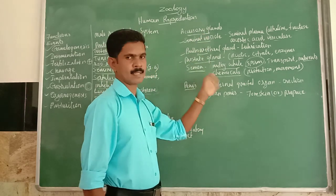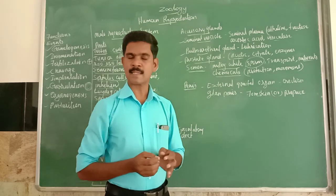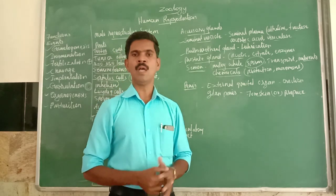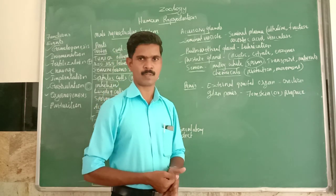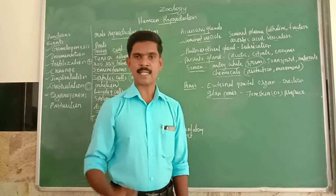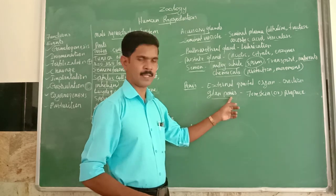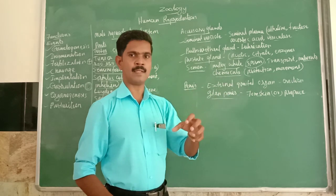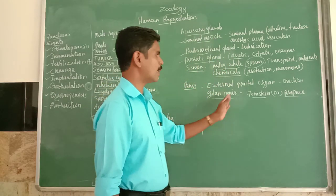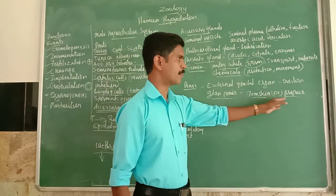The last part of the male reproductive system is the penis, the external genital organ. It is made up of special types of tissue that become erect during sexual activities. At the end of the penis, there is an enlarged portion called the glans penis, which is covered by a folded skin called the foreskin or prepuce.